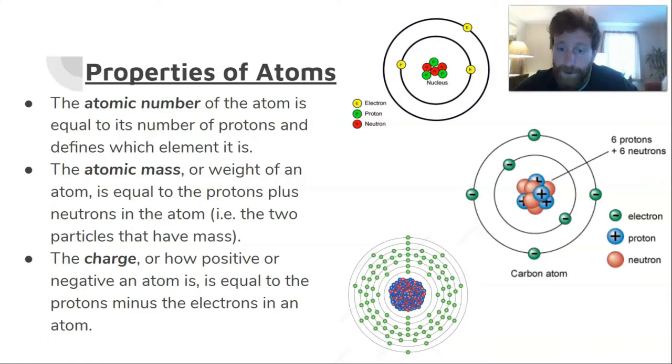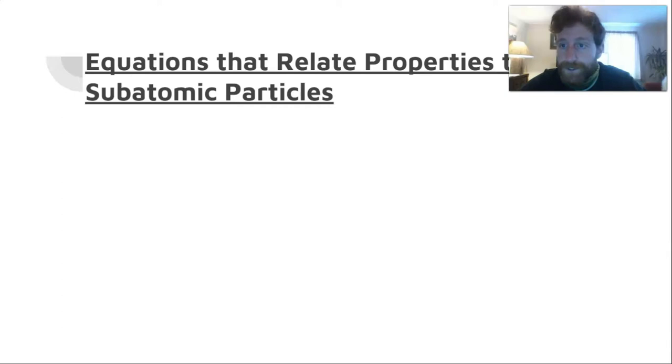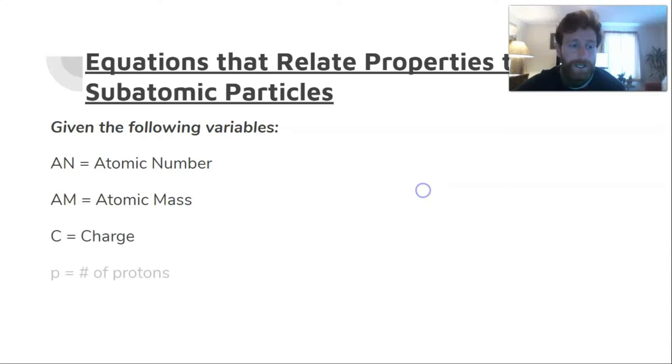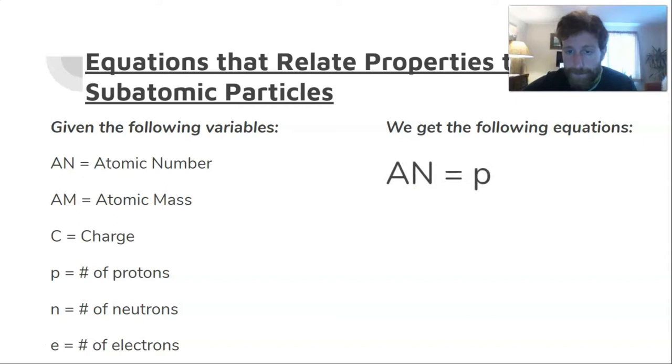Here are some helpful equations that relate the subatomic particles to the atomic properties. Let's define some variables: let AN equal the atomic number, AM equal atomic mass, C equal charge, p equal the number of protons, n equal the number of neutrons, and e equal the number of electrons. From that we can write three equations that are super helpful when you go to do your assignment today. First one is very simple: the atomic number is just equal to the number of protons. The second one is that the atomic mass is equal to the protons plus the neutrons. Know that I can rearrange this if I need to. Say I know the atomic mass and I know the number of protons and I want to solve for the number of neutrons—I would subtract p from each side and I'd make a new equation that says AM minus p equals n.